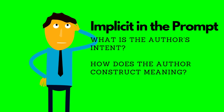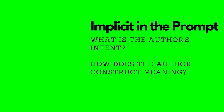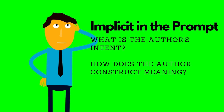What my students do is read and go terms-and-devices hunting — we go looking for all the little nuance, all the machinations, everything that Taylor Swift is doing on a rhetorical level. Then we take three sentences to answer the question 'how does the author construct meaning?' and one sentence to answer 'what is the author's intent?'